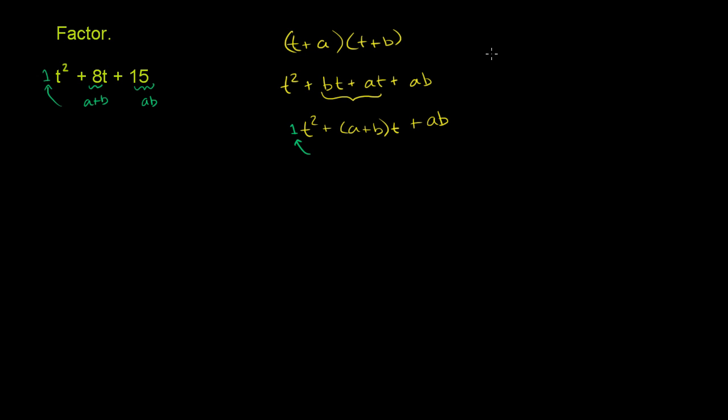In general, if you see anything of the form x squared plus bx plus c, the coefficient here is 1. Then you just have to find two terms or two numbers whose sum is equal to this thing right here and whose product is equal to that thing right there. Whose sum is equal to 8 and whose product is equal to 15.